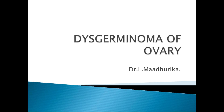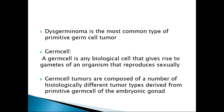I will start the class. Today's topic is dysgerminoma of the ovary. Dysgerminoma is a germ cell tumor arising from the germ cells of the ovary. A germ cell is any biological cell that gives rise to gametes of an organism that reproduces sexually. Germ cell tumors are composed of histologically different tumor types derived from primitive germ cells of the embryonic gonad.